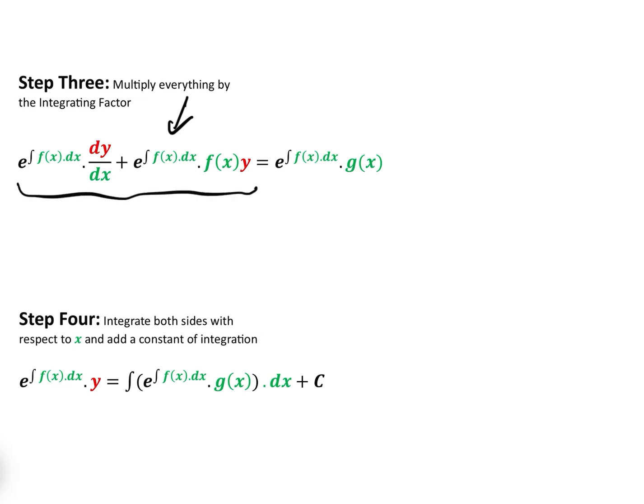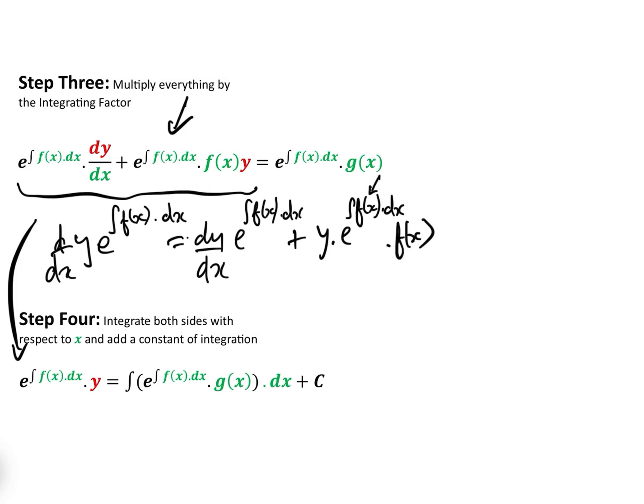what happens to all of this is that it becomes e to the integral fx dx times y. And we can see why that is, because if we differentiate y times e to the integral of f of x dx, if we differentiate that with respect to x, then we get dy dx times e to the integral of fx dx, plus y times the differential of e to the integral of fx dx equals e to the integral of fx dx times by the differential of that, which by definition is f of x.